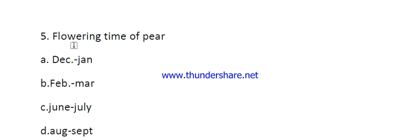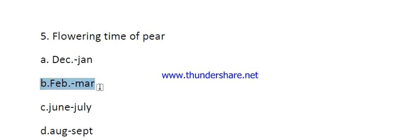Question five: flowering time in pear. Options are December-January, February-March, June-July, and August-September. The right answer is February-March. You have to remember the flowering time of different fruit crops like pear, apple, and guava.